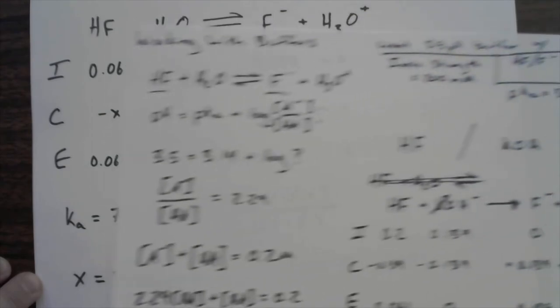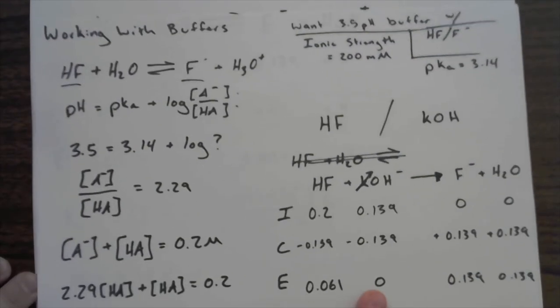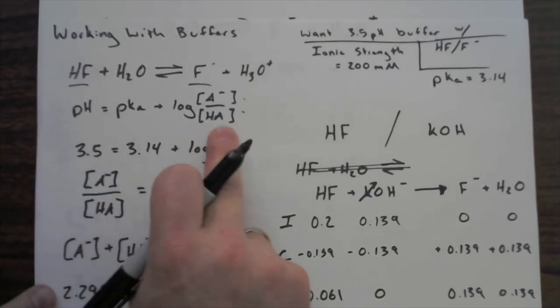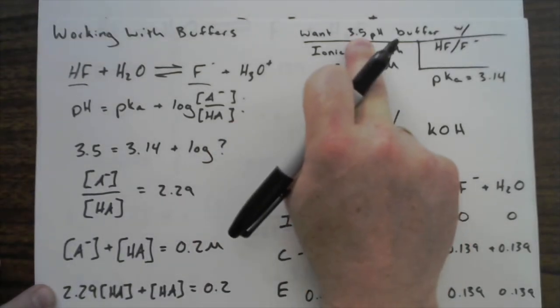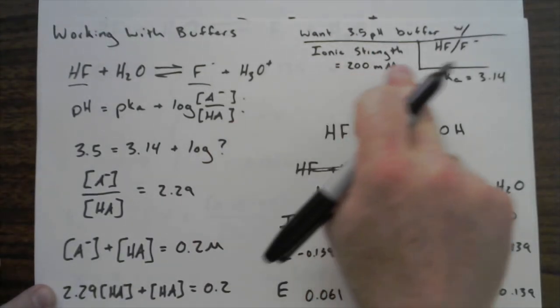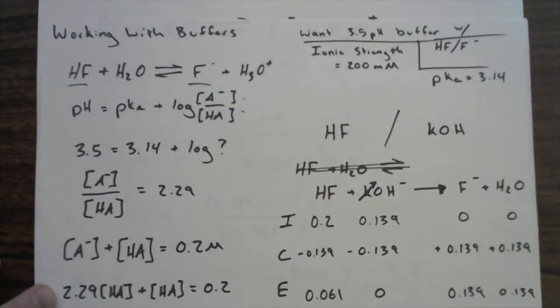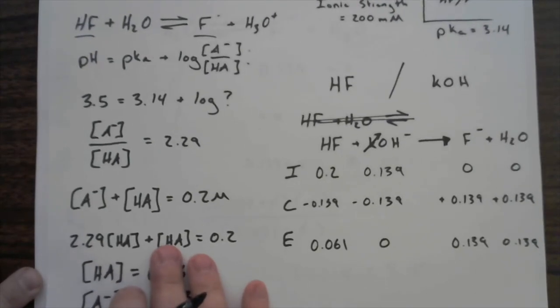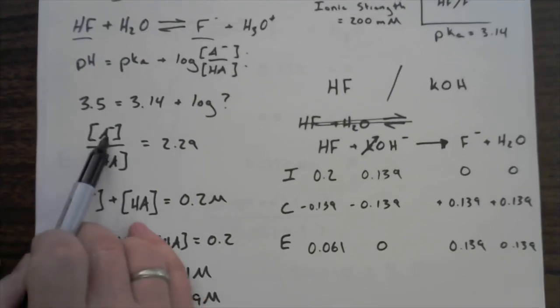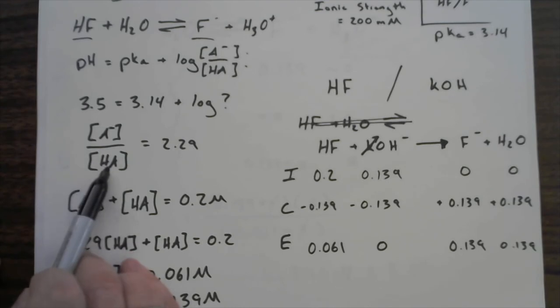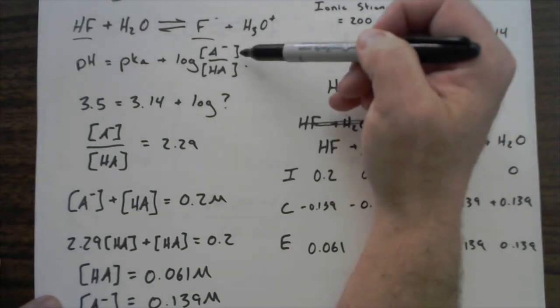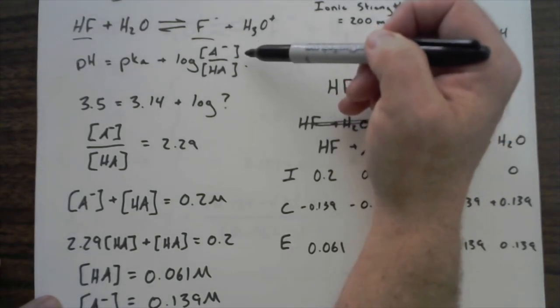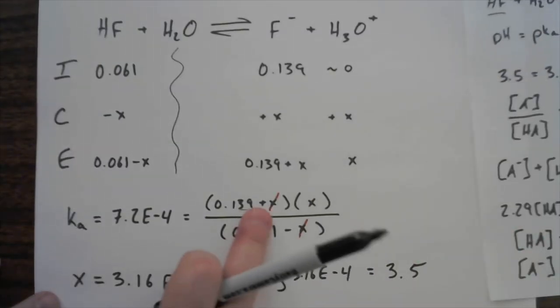And I want to take us back for a moment to what we did over here with the Henderson-Hasselbalch equation. We wanted to start with making a buffer that's 3.5. I had these requirements on it. I used Henderson-Hasselbalch. And one thing that I want to point out to everybody is these values—these are the values that you need to have in solution. This is the ratio that you need to have.